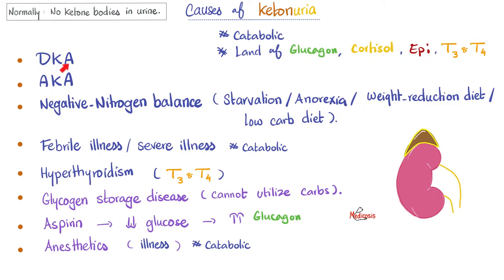Examples: Diabetic ketoacidosis — insulin is lacking, so I shift to the other land. Alcoholic ketoacidosis — alcohol metabolism produces tons of acetyl-CoA, which can become ketone bodies. Moreover, many alcoholic patients forget to eat; they get their energy from alcohol and skip meals, putting them in the glucagon land. Next, all conditions of negative nitrogen balance — such as starvation, anorexia, weight reduction diets, low-carb diets, or high-protein low-carb diets — can, to a certain extent, put me in the land of ketosis.